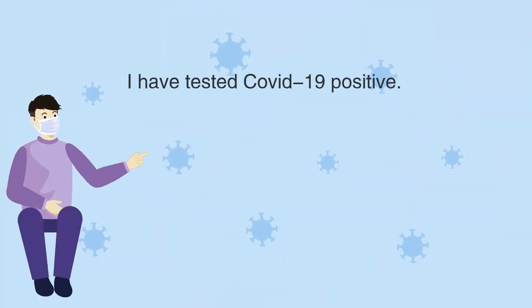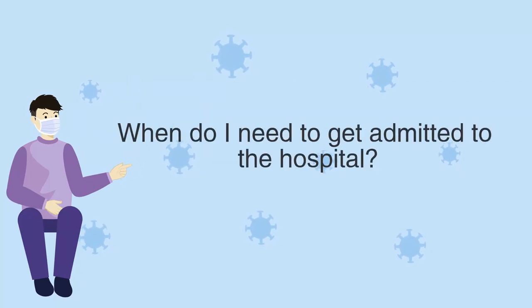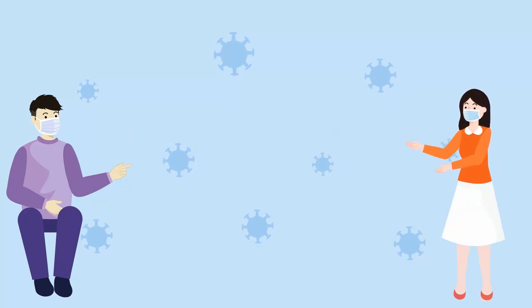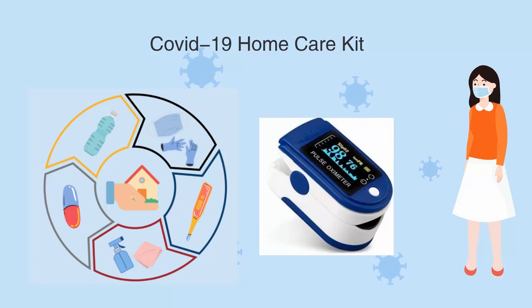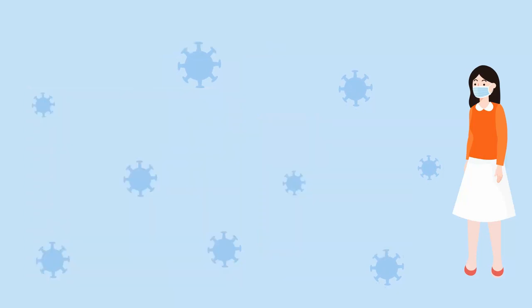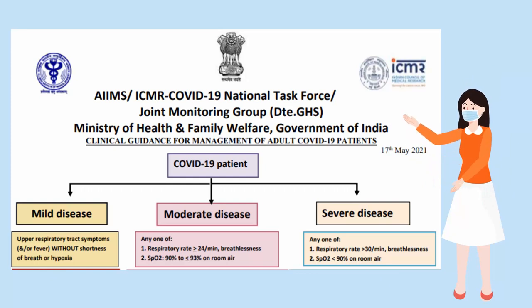If you test positive for COVID-19, when do you need hospital admission? Based on test results and the infected person's symptoms, the doctor will assess the severity of the disease and advise home isolation or hospitalization. As per ICMR guidelines, doctors may advise patients with mild symptoms to be treated in home isolation, whereas patients with moderate disease may be advised hospitalization. In case the symptoms are severe, the patient may need to be admitted to an ICU.